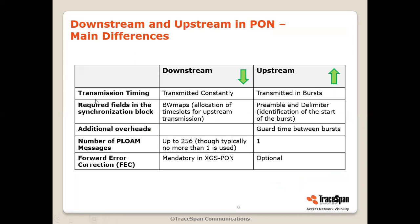The first difference is that downstream is transmitted constantly, whereas the upstream is transmitted in bursts. There are some different fields in the overhead blocks. The downstream requires the BW maps, which indicate the time slots allocated for upstream transmission. On the other hand, the upstream has the preamble and the delimiter, which indicate the start of the burst and allow the receiver to synchronize on the upstream. There is an additional overhead called guard time, which is only relevant for the upstream — I will explain what it is in a few minutes.